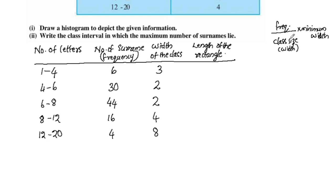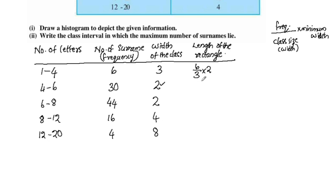The length of the rectangle is calculated using the equation: frequency divided by class size, multiplied by the minimum width. For 1 to 4: frequency is 6, class size (width) is 3, minimum width is 2. So: 6 divided by 3, multiplied by 2 equals 4.